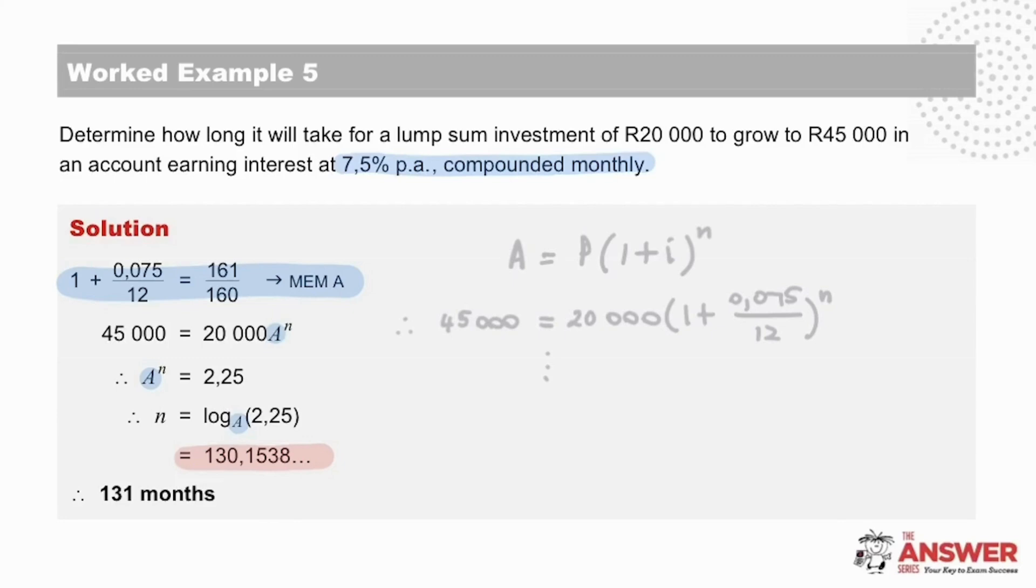When we check the question to remind ourselves exactly what they were asking, we see they want to know how long it will take the investment to grow to 45,000 rand. In other words, getting an answer of 130 comma something tells us that it takes longer than 130 months to reach the 45,000 rand, which means we must round up to 131 months as our final answer.